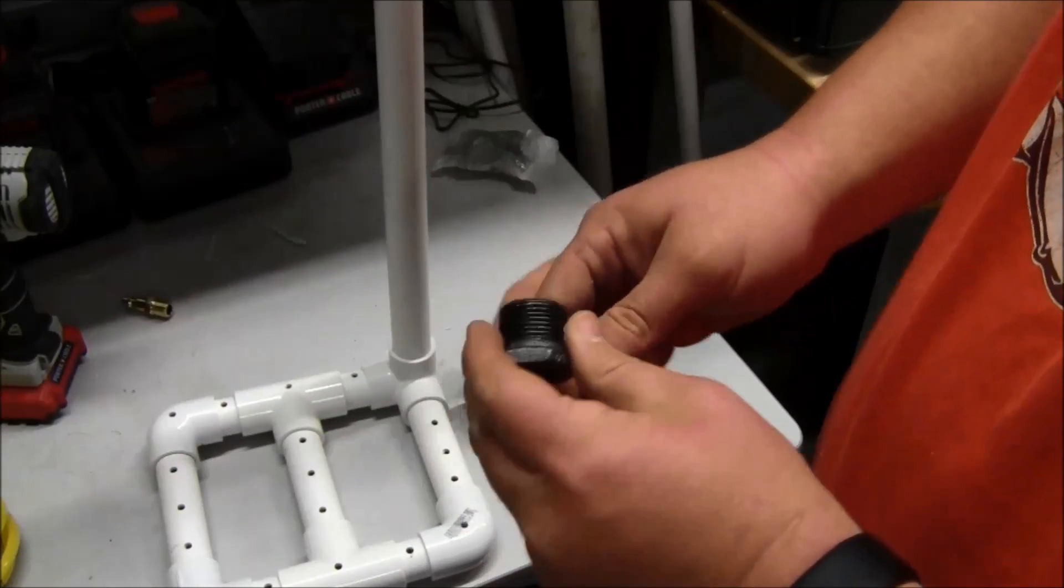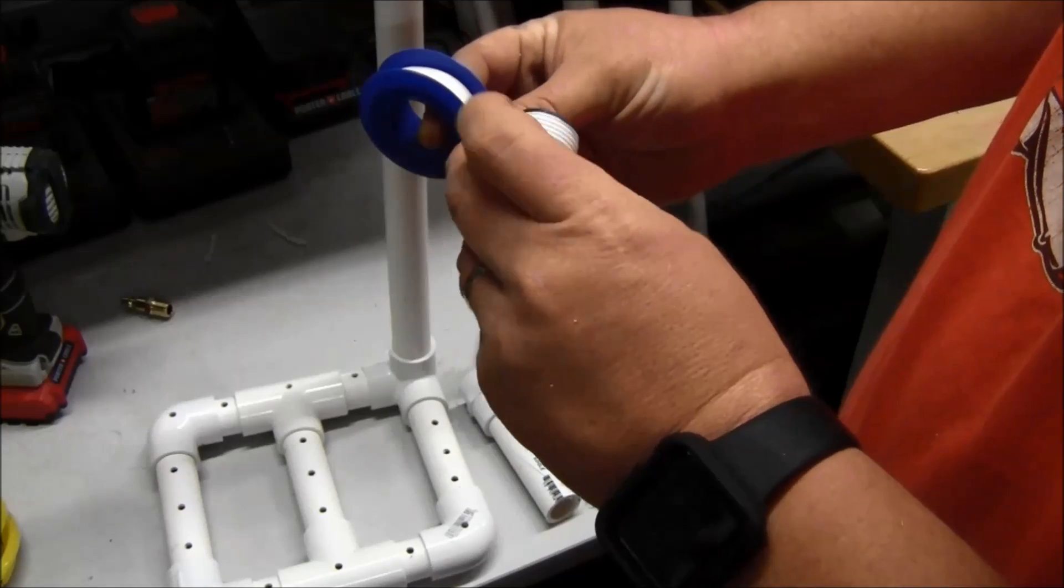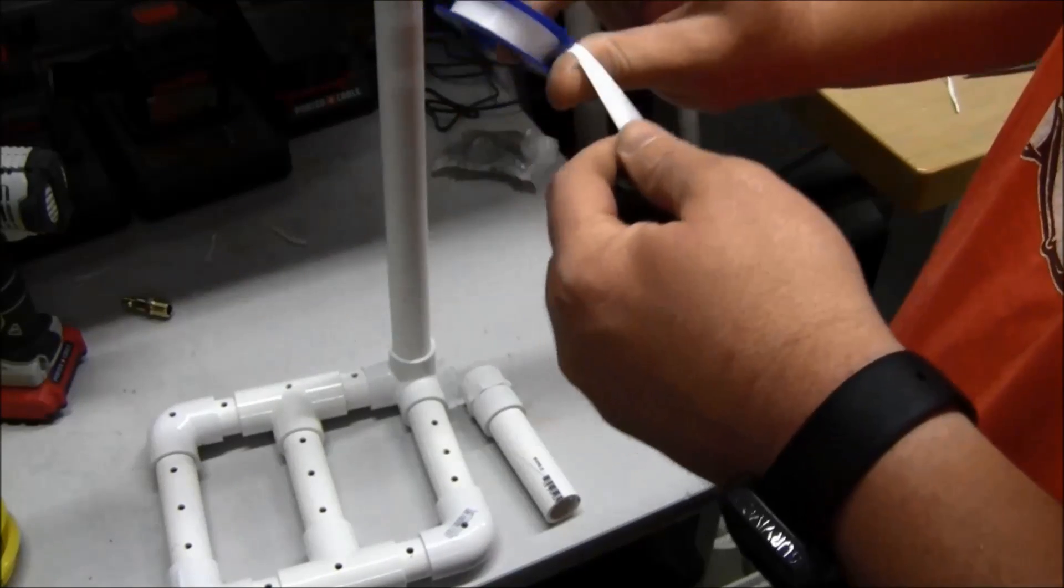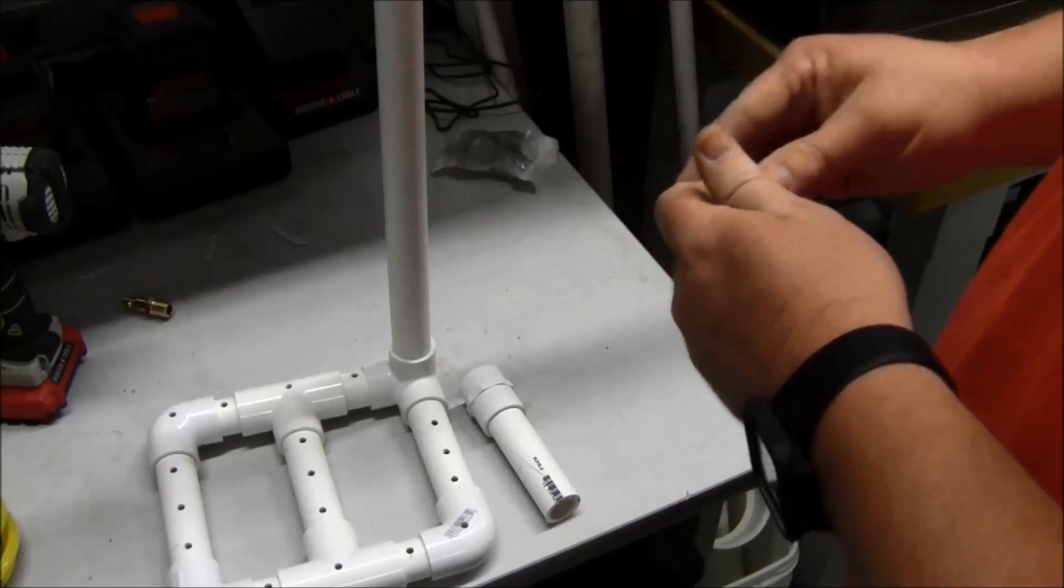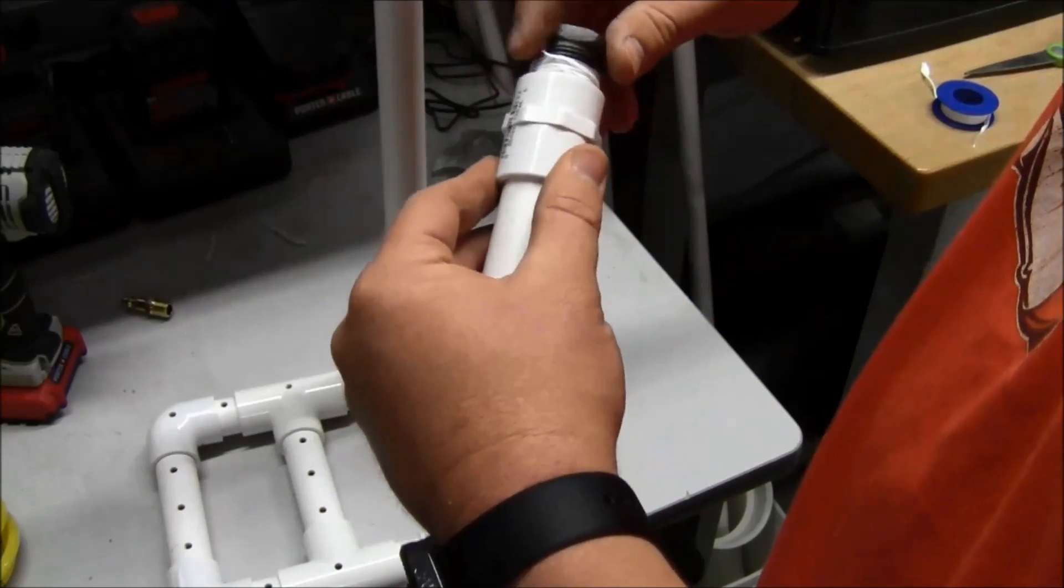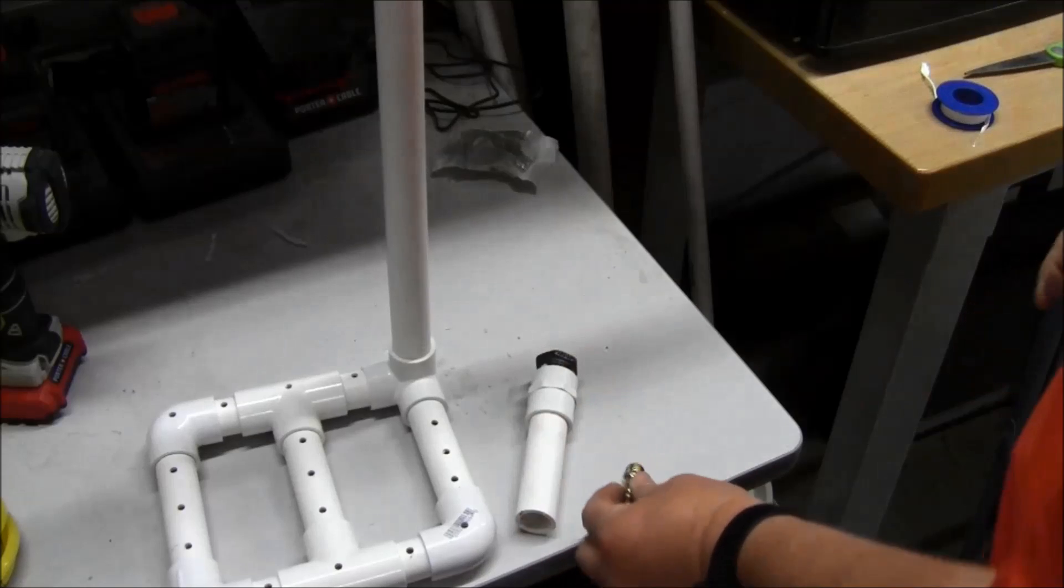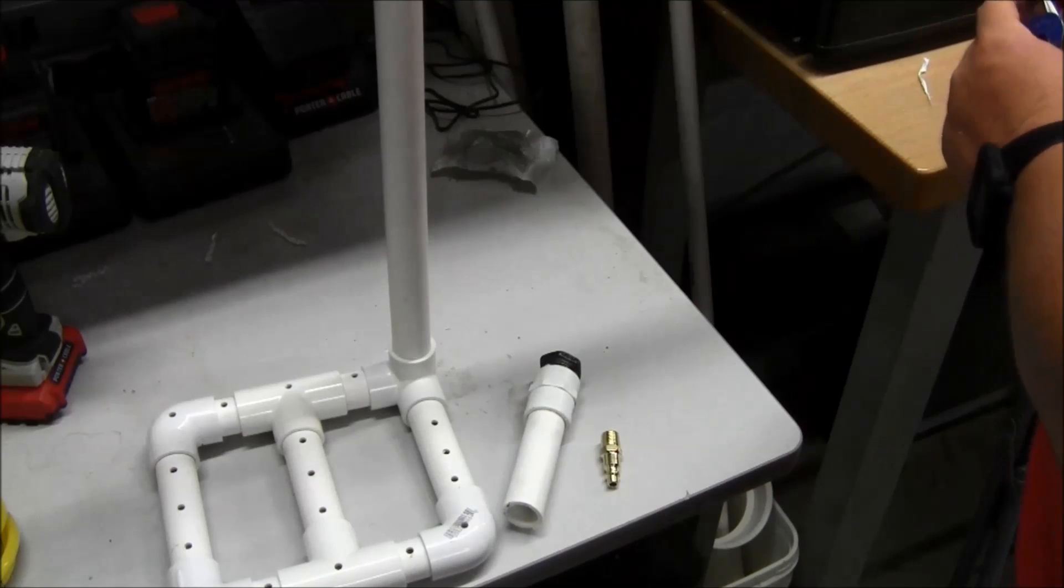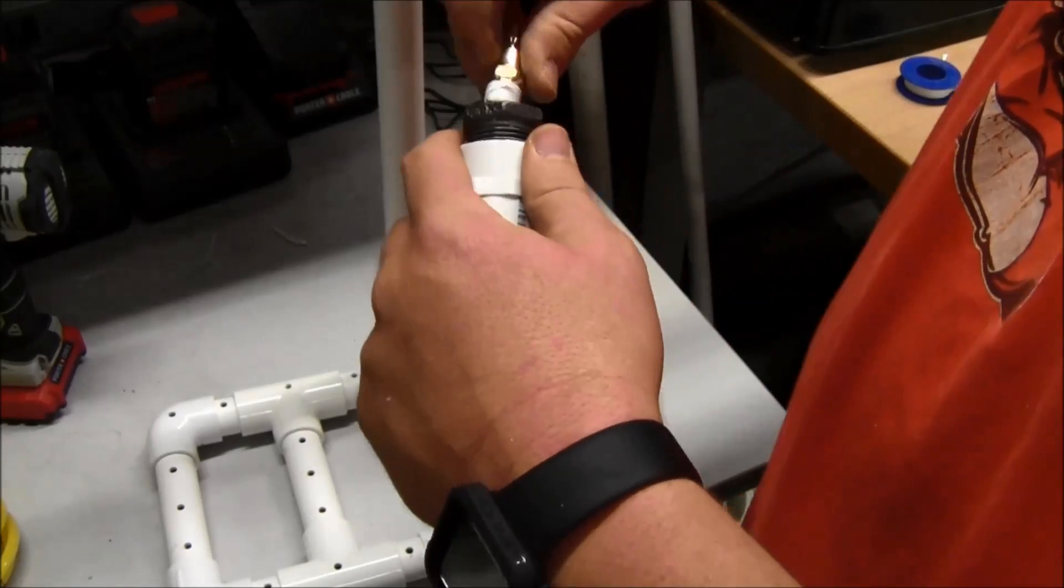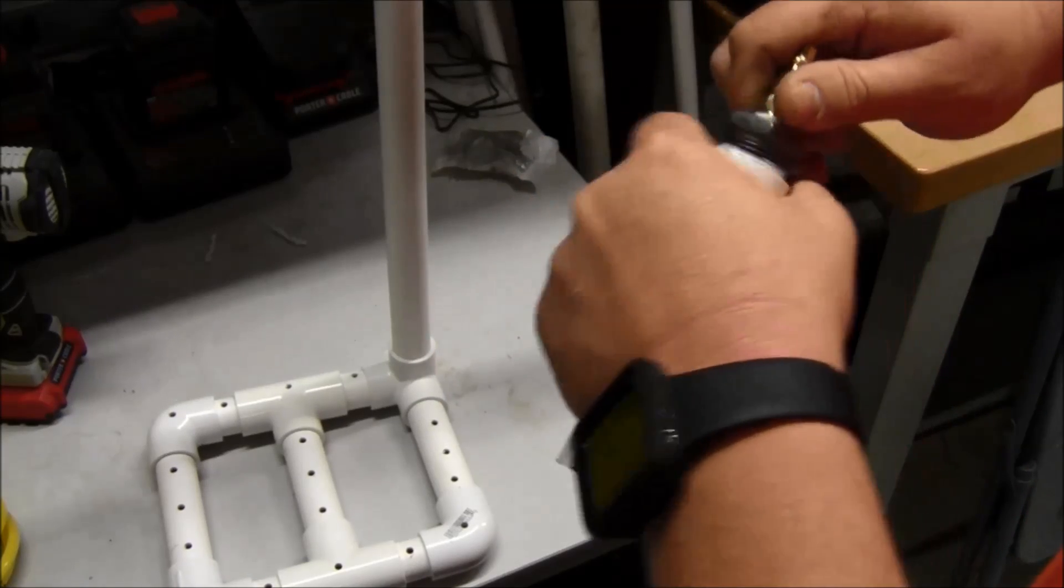Now I'm just going to wrap some Teflon tape around the threads here. My fingers won't work the way I want them to. And we're going to thread this bushing in the adapter. Now we're going to do the same thing with the quarter inch quick connect. I think this one I am going to get a wrench just to go ahead and give it a good tighten down.